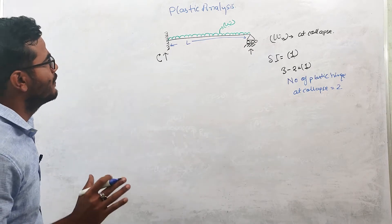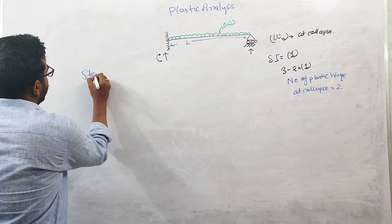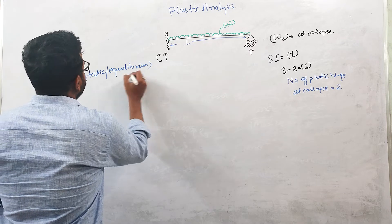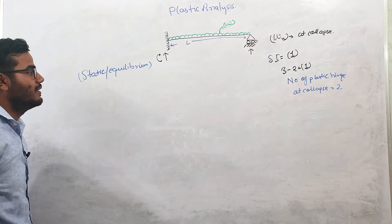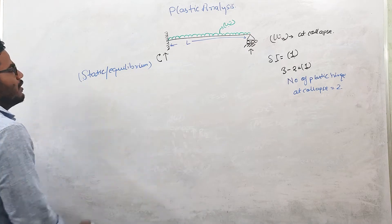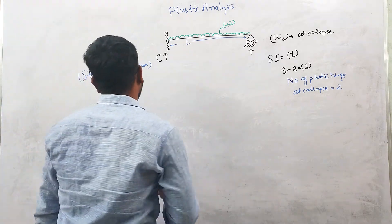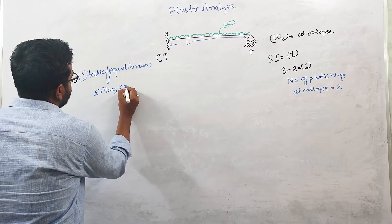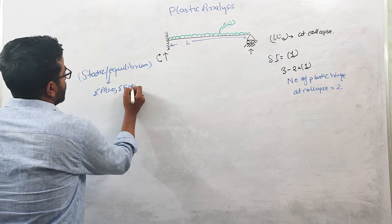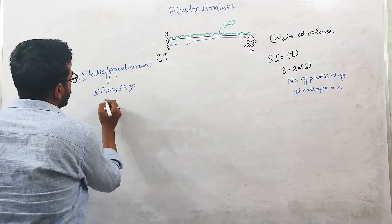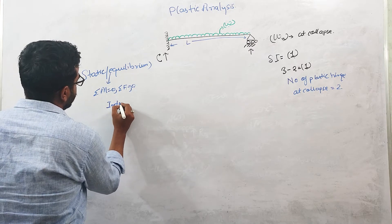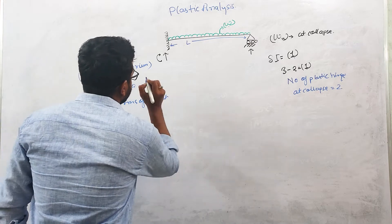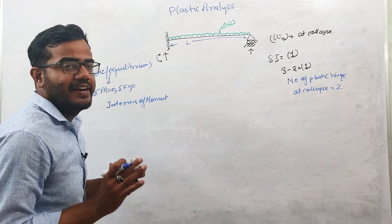We need to solve this problem by the static method, also called the equilibrium method, as discussed in previous lectures. In this method, we write the equilibrium equation in terms of moment, using the conditions: summation M = 0 and summation F = 0. So we write the static equation in terms of moment.